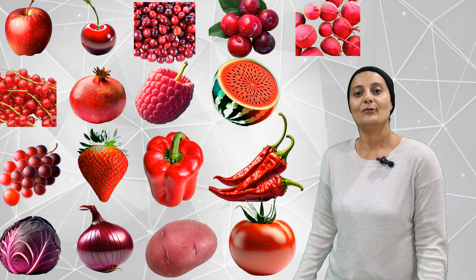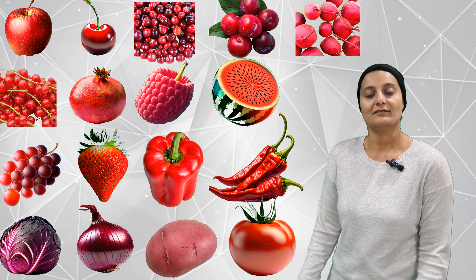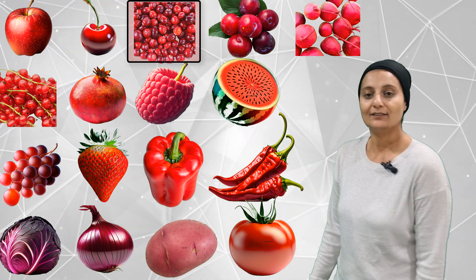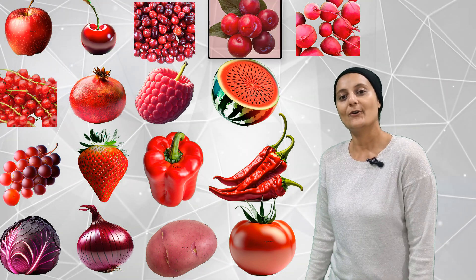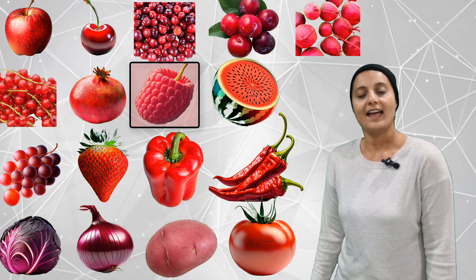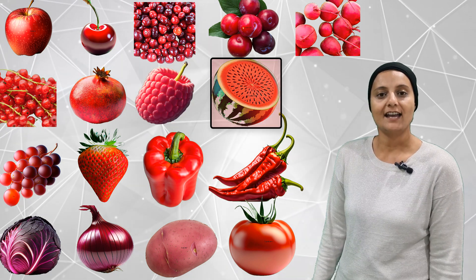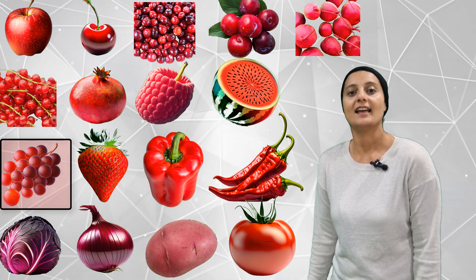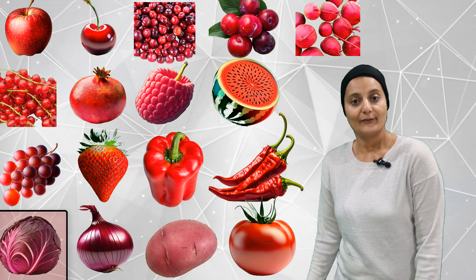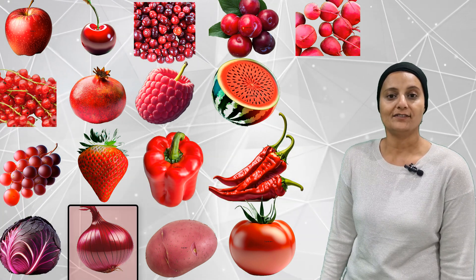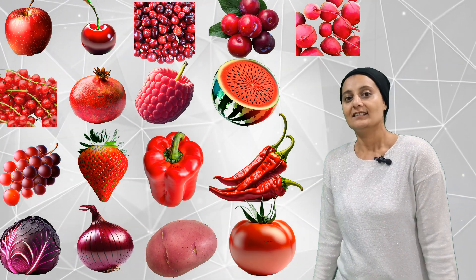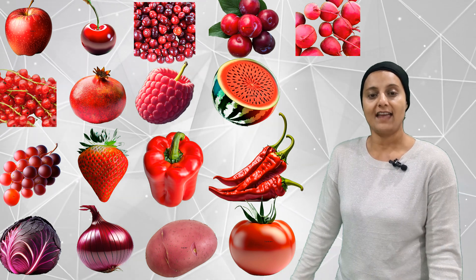How many red fruits and veggies can you count this time? 1, 2, 3, 4, 5, 6, 7, 8, 9, 10, 11, 12, 13, 14, 15, 16, 17. Seventeen red fruits and veggies.